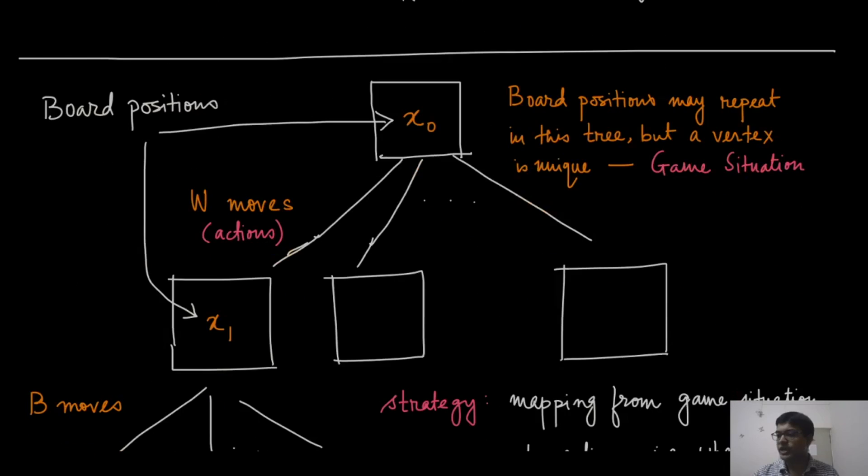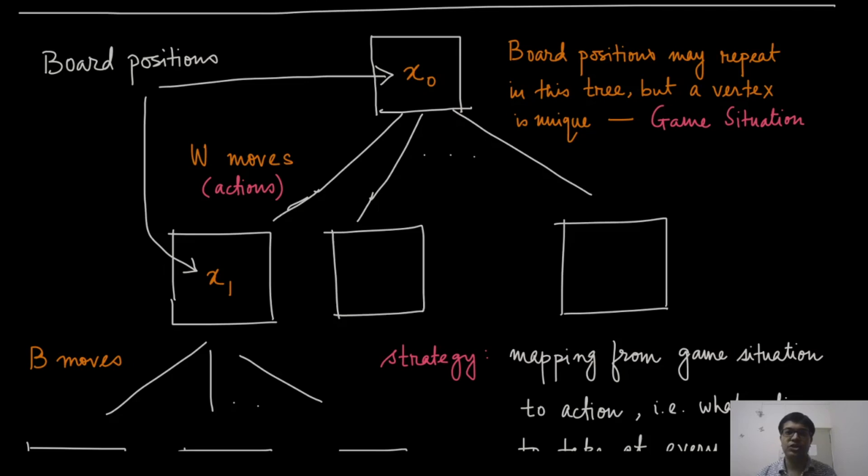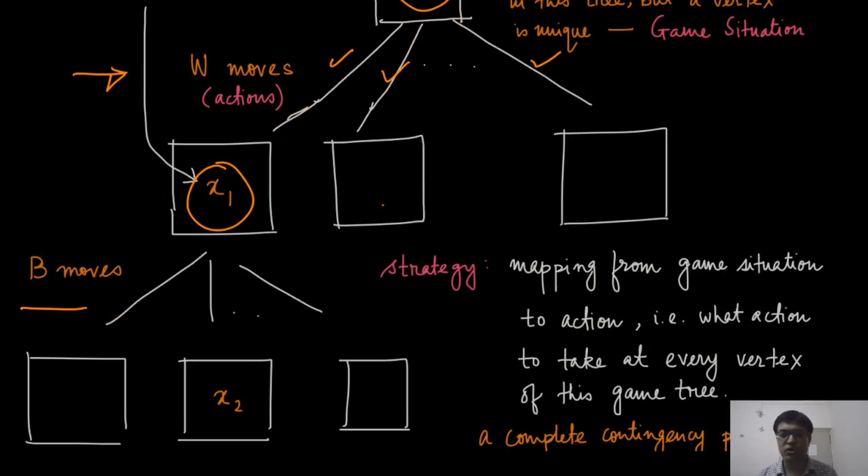It is much easier to explain this using a graph, a tree rather. So, we will call this as the game tree. So, it starts with the initial board position, which is the x_0. And then, the white moves first in this, that is the norm of chess. And it takes one of these actions. Actions here are shown with these edges. One of these actions will change the board position to a different board position. Let us say x_1. And then, it is time for B to move. And when B moves, it moves to a different board position. So, let us say, if B takes this action,